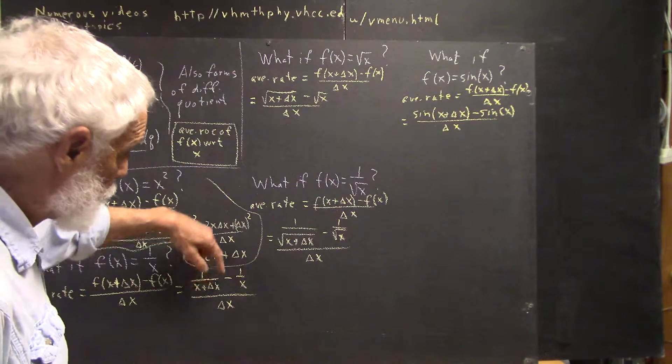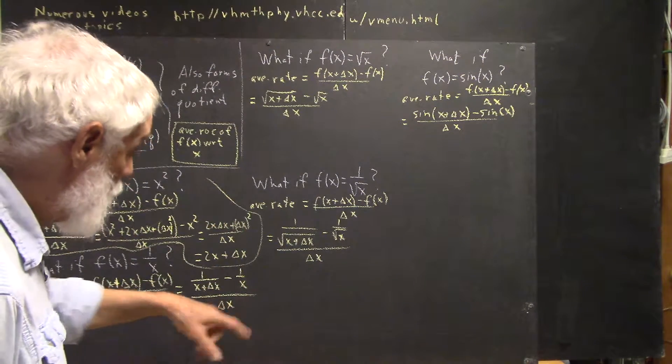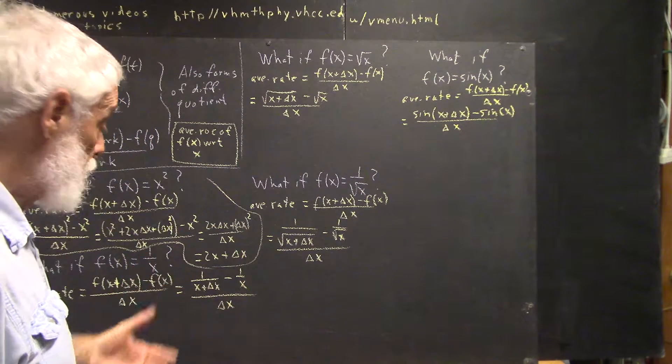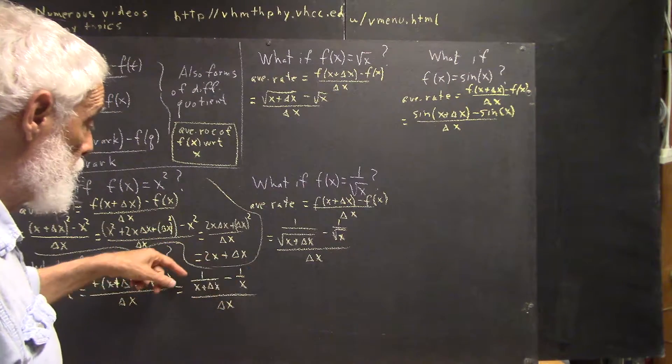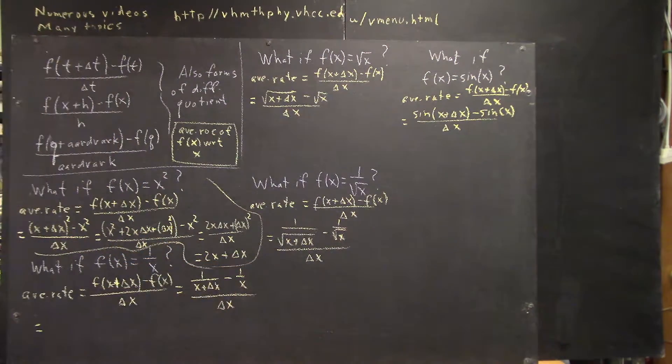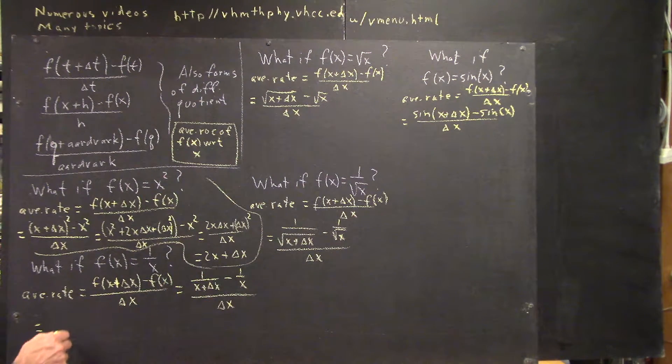You first of all express the numerator and the denominator, if necessary, as simple fractions. This isn't yet a simple fraction, it's a difference of two fractions. So how do I express this as a simple fraction?